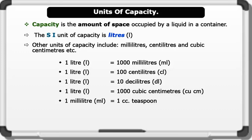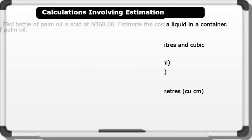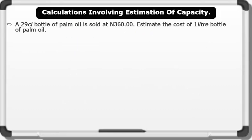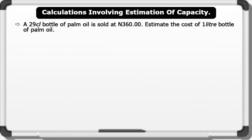Now let's see some calculations involving estimation of capacity. A 29 centiliters bottle of palm oil is sold at 360 Naira. Estimate the cost of a 1 liter bottle of palm oil.